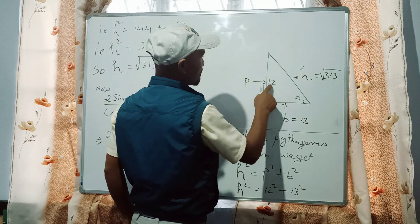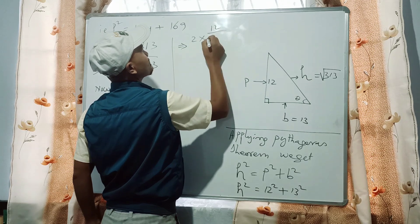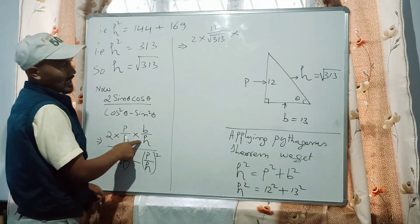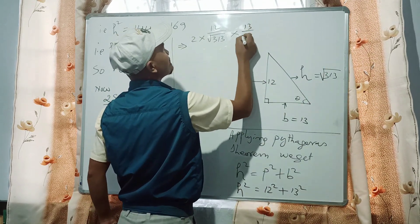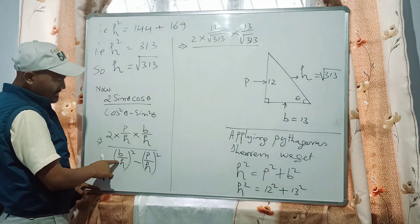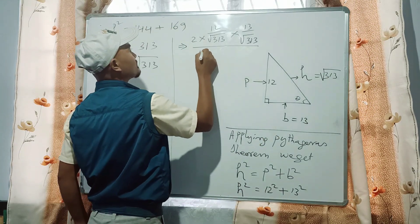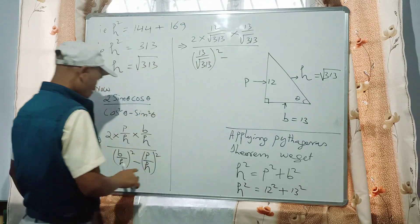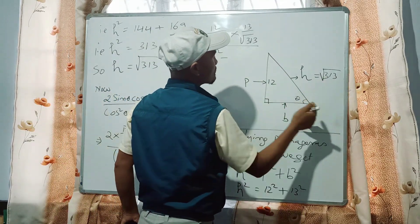P by H equals 12 by square root of 313, since P is 12 and H is square root of 313. Multiplying B by H: if B is 13 and H is square root of 313, then it is 13 by square root of 313. B by H squared is 13 by square root of 313, all squared. Minus P by H squared gives 12 by square root of 313, all squared.